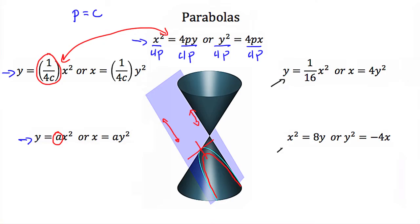Here we have some examples of parabolic equations: y is equal to 1/16 x squared, or x is equal to 4y squared, x squared is equal to 8y, or y squared is equal to negative 4x. What's important to notice in all these equations is we can tell that these will form a parabola because either the x or the y is squared, but only one of the two variables x and y is squared. If x is squared, then y is not. If y is squared, then x is not. That's an easy way to recognize the equation of a parabola.